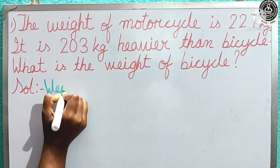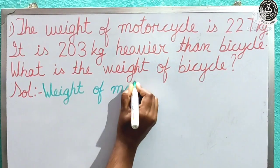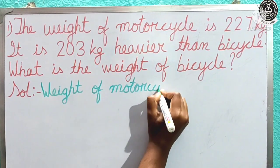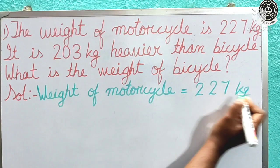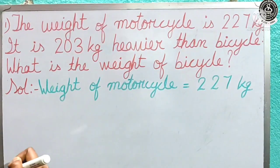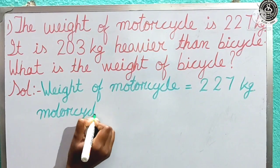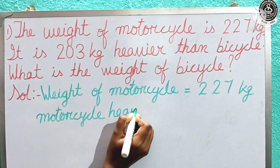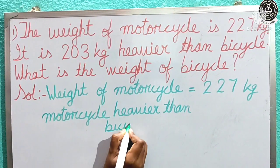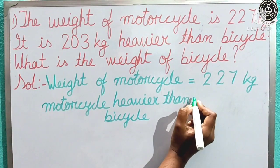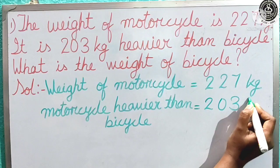Our first statement will be: weight of motorcycle equal to — how much is it given, children? 227 kg. Next, the motorcycle is 203 kg heavier than bicycle, so we can write: motorcycle heavier than bicycle equal to 203 kg.